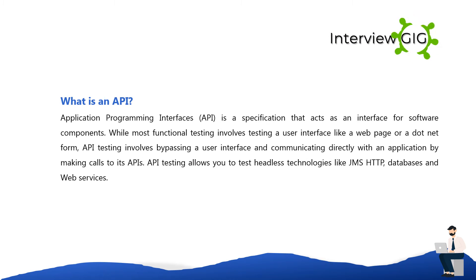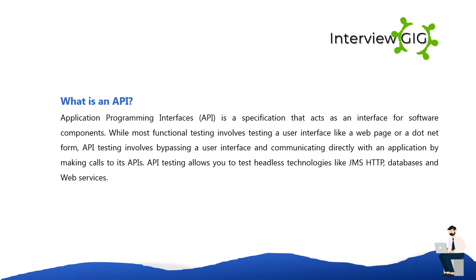What is an API? Application Programming Interface (API) is a specification that acts as an interface for software components. While most functional testing involves testing a user interface like a web page or a .NET form, API testing involves bypassing a user interface and communicating directly with an application by making calls to its APIs. API testing allows you to test headless technologies like JMS, HTTP, databases, and web services.